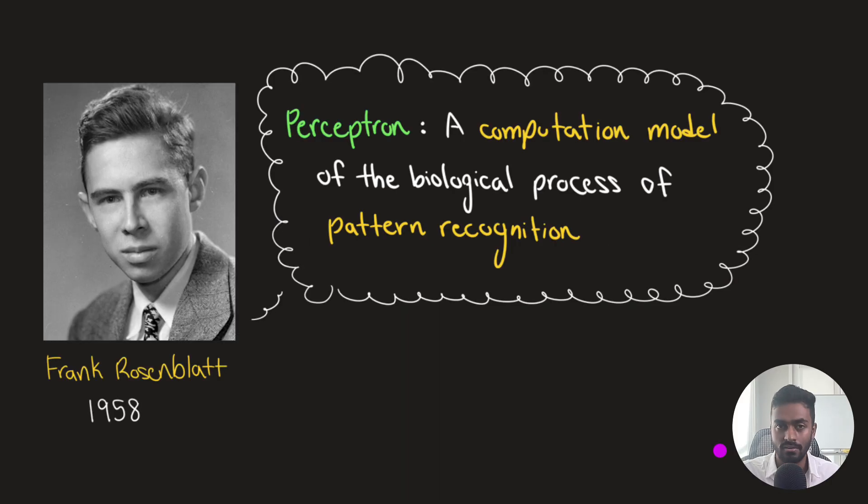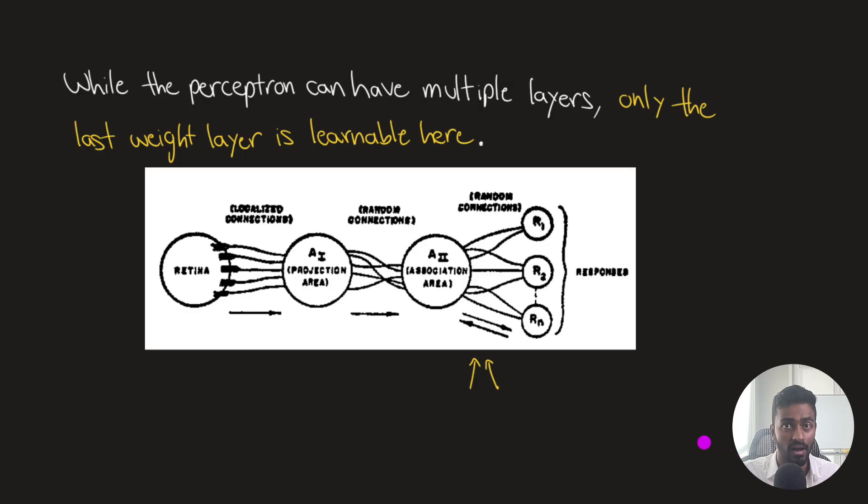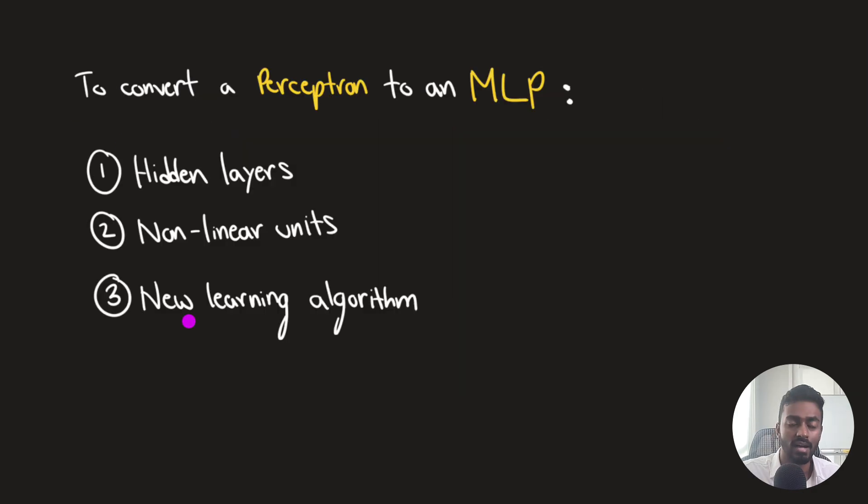So we started this video with a definition of a perceptron. It's a computation model of the biological process of pattern recognition. Now Frank Rosenblatt also introduced a multi-layer architecture to this perceptron and so we call it the multi-layer perceptron. But only the last layer is going to be learned here. However, there have been additions of non-linear hidden units so as to learn more complex decision boundaries as well as a new learning algorithm so that we can learn all weights and not just the weights that are associated with the final layer. And that's all that we have for today.